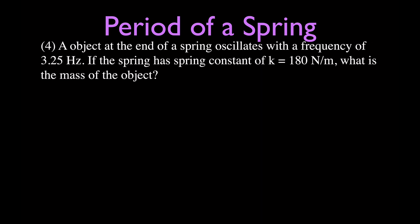Problem four: an object at the end of a spring oscillates at a frequency of 3.25 hertz. We're given the spring constant and want to find the mass. We use the same period equation, but this time we're solving for m, which is under the square root in the numerator. We need to do some algebra to isolate the mass.